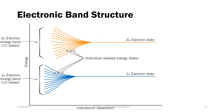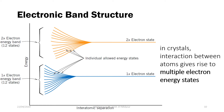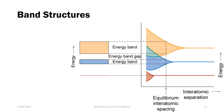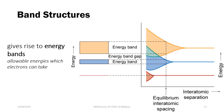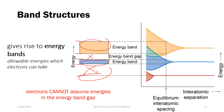We have what we call the electronic band structure. The electronic band structure gives you the allowable energy levels for which your electrons can take in a solid. In crystals, the interaction between multiple atoms gives rise to multiple allowable energy states which the electron can assume. Given enough atoms, we can form what we call energy bands — these are the allowable energies which your electrons can take. Electrons cannot assume energies in the energy band gap.